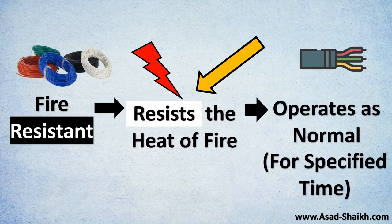It might not work for hours and hours, but maybe for 180 minutes — it depends on the type of cable and insulation selected. For a certain specified time and temperature, it will keep on working as normal even under fire conditions. These cables are usually preferred for emergency shutdown systems where, in case of a hazard, the system has to still work and protect the environment, people, and assets.